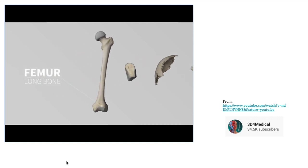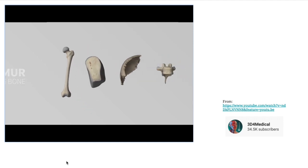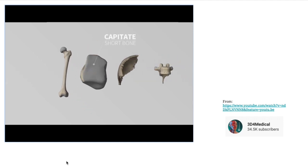Long bones have a tubular shaft and are found in the limbs such as the femur. Short bones are cuboidal and are found in the ankle and wrist, such as the capitate bone of the wrist.